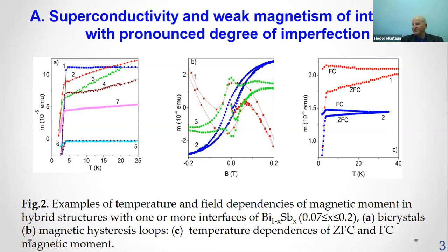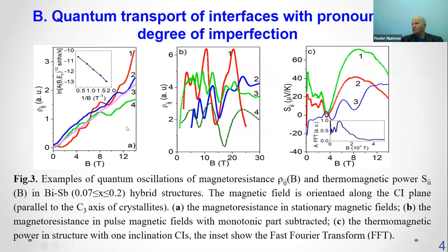Figure 3 shows an example of the quantum oscillations of magnetoresistance and thermomagnetic power in our bismuth antimony structures. One frequency of quantum oscillations corresponding to the Fermi surfaces of the crystalline test and two frequencies associated with the Fermi surface of the interfaces layers were detected.